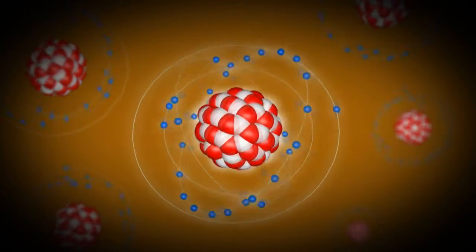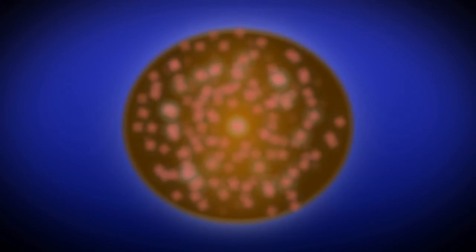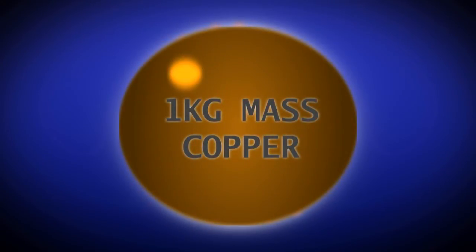Mass is essentially a way of measuring the amount of material in the substance, pretty much how many atoms it has. So a one kilogram mass of copper will always contain the same quantity of atoms.